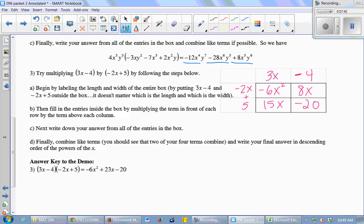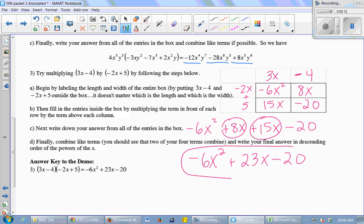And then we write down the sum of them. So I'm going to have negative 6x squared plus 8x plus 15x minus 20. And then we have some like terms. What two terms can I add together here? 8x and 15x are like terms. So when I add them together, I get negative 6x squared plus 23x minus 20. That's it. That's all I've got to show you. You are going to have plenty of practice in the class activities.